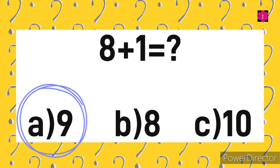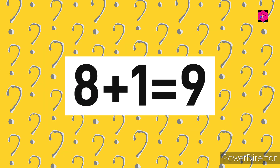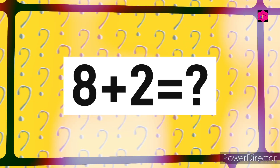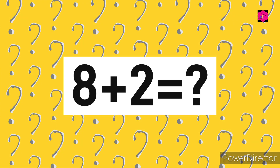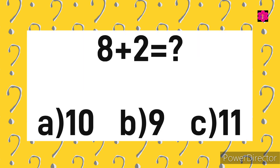Yes, the right answer is A) 9. 8 plus 1 is equal to 9. Good job kids! Moving toward the next sum: 8 plus 2 is equal to? Your options are A) 10, B) 9, and C) 11. Your time starts now.